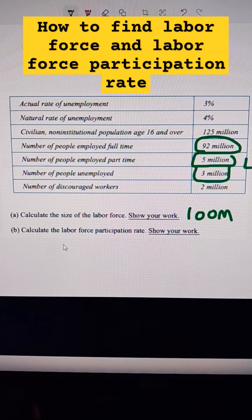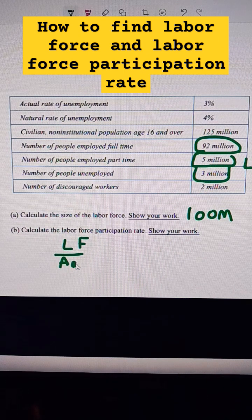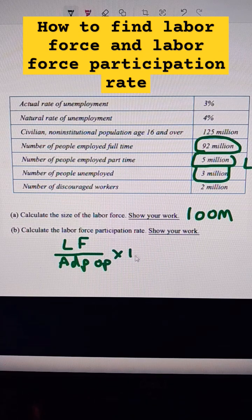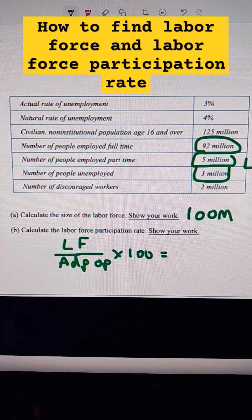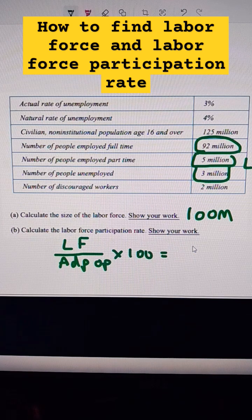The labor force participation rate is the labor force divided by the adult population, times 100. It's like a fraction of the population that is choosing and able to work. In this case, it would be the 100 million divided by our adult population, which is 125.